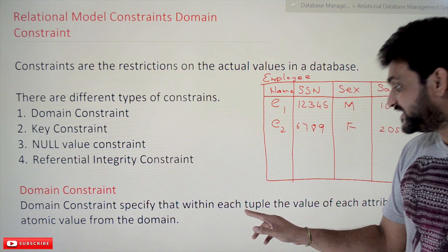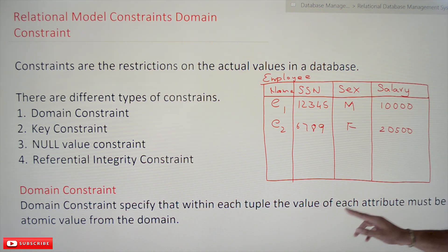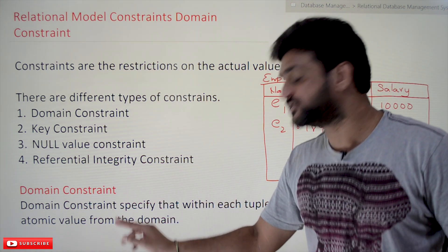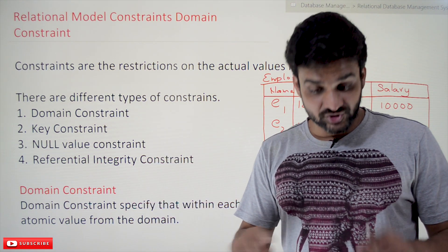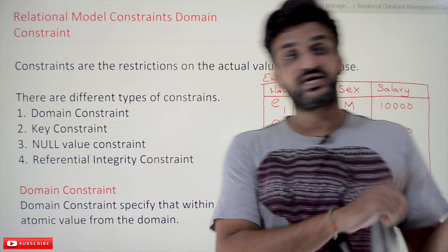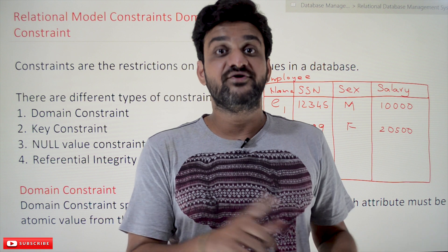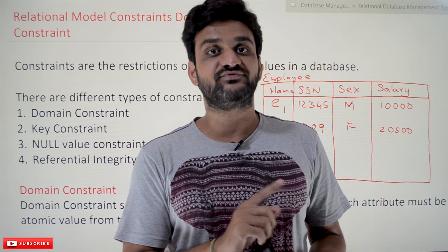Domain constraints specify that within each tuple, the value of each attribute must be an atomic value from the domain. The discussion about domain has already been made in our previous videos — if you haven't watched that video, please watch that first and come back here.